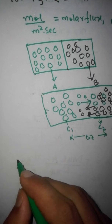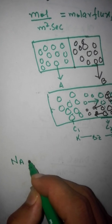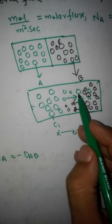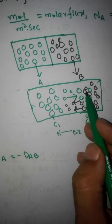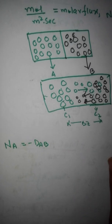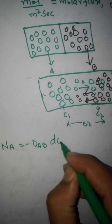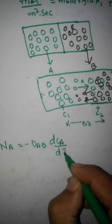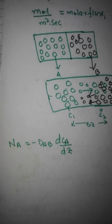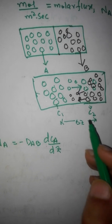From Fick's law of molecular diffusion, written for gas A only, the molar flux is: minus D_AB — the diffusivity of A in B, representing the movement of molecule A through gas B — multiplied by the change in concentration of A with respect to distance delta Z. This is Fick's law of molecular diffusion.